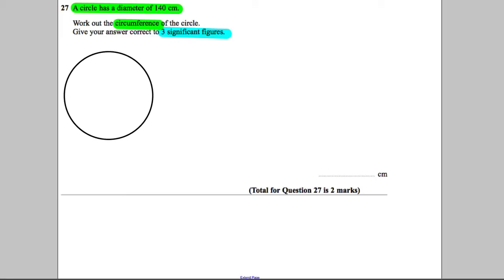We have a circle, and the diameter is a line that goes through the center of the circle from one edge of the circumference to the other. We're told that is equal to 140 centimeters.